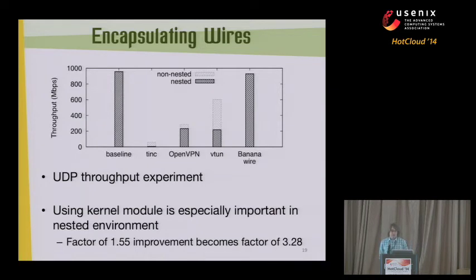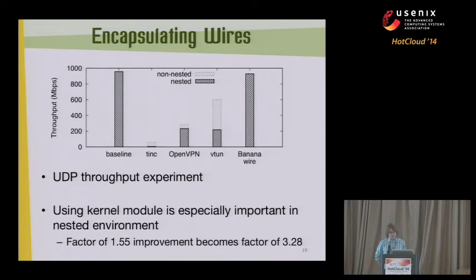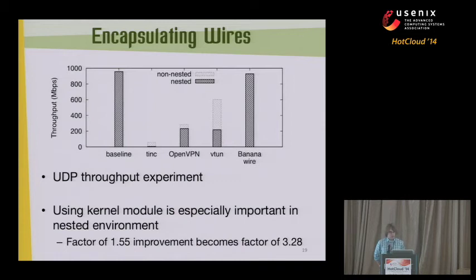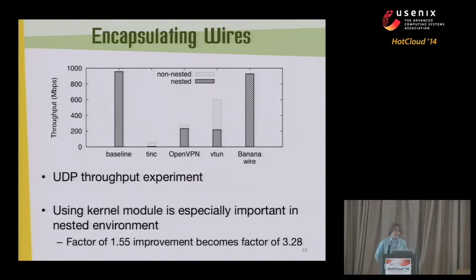We also did a brief evaluation on our wire types. In our implementation, we used the kernel module to implement an encapsulating wire which adds a VXLAN header on every packet, and we compared this with a bunch of other tunneling mechanisms. What we wanted to prove was that we could do some kind of encapsulation with decent performance, because any time you have QORMs and spikes on different machines, you're going to be doing some kind of encapsulation. Our results showed pretty good performance - we did get a performance improvement by using our kernel module. Using a kernel module was especially important in the nested environment, because things like context switches are magnified when you're in a nested environment.